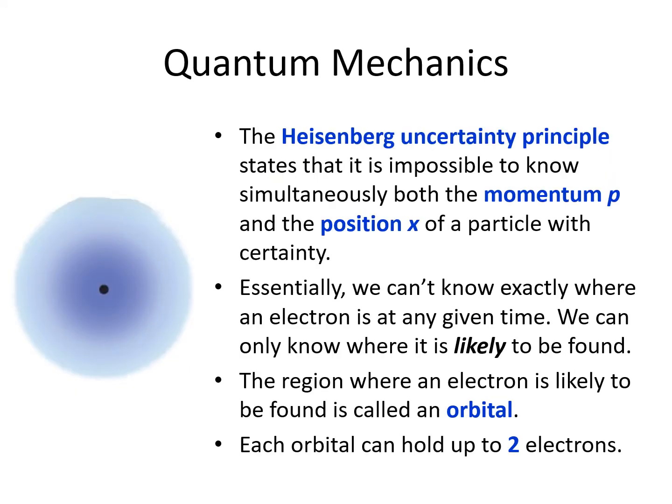There is an important principle in quantum mechanics called the Heisenberg uncertainty principle, which says that it is impossible to know the position and momentum of a particle at the same time. Basically, we can describe regions where a particle like an electron is likely to be found, but we can't pinpoint it at any given time. The regions where electrons are likely to be found are called orbitals. Each orbital can hold up to two electrons.